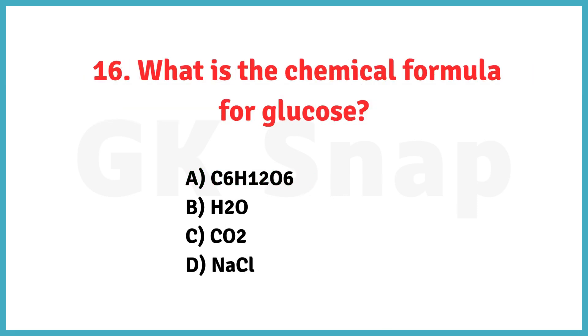What is the chemical formula for glucose? Correct answer is option A: C6H12O6.